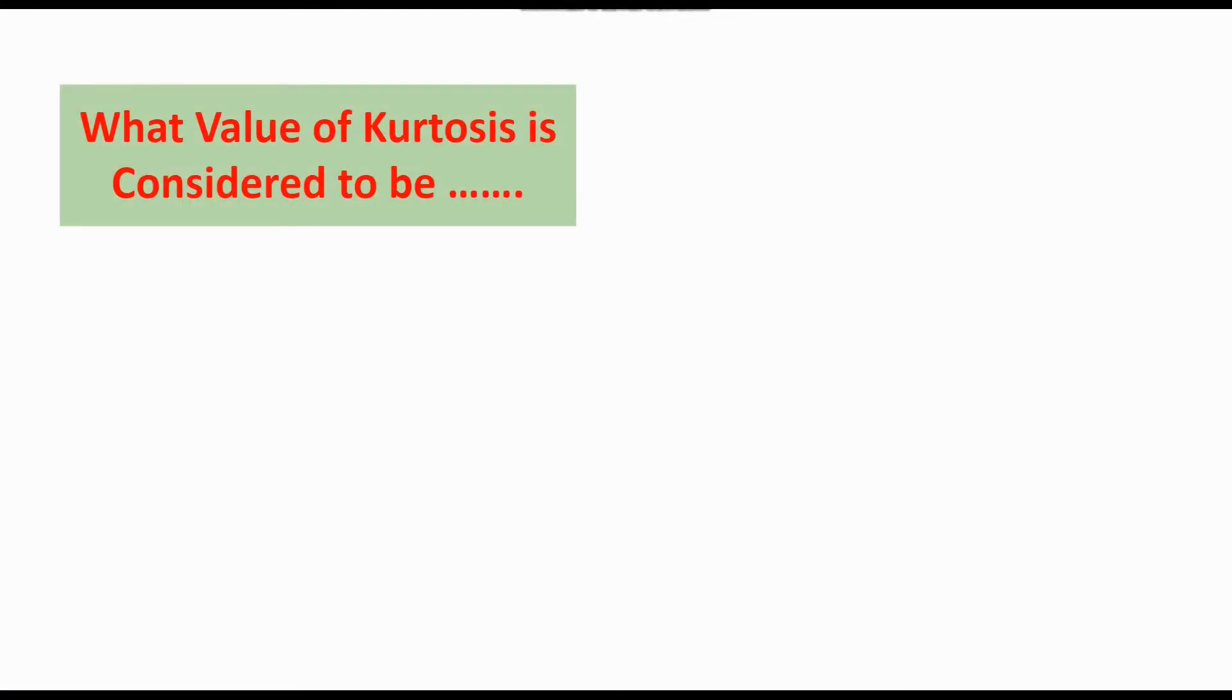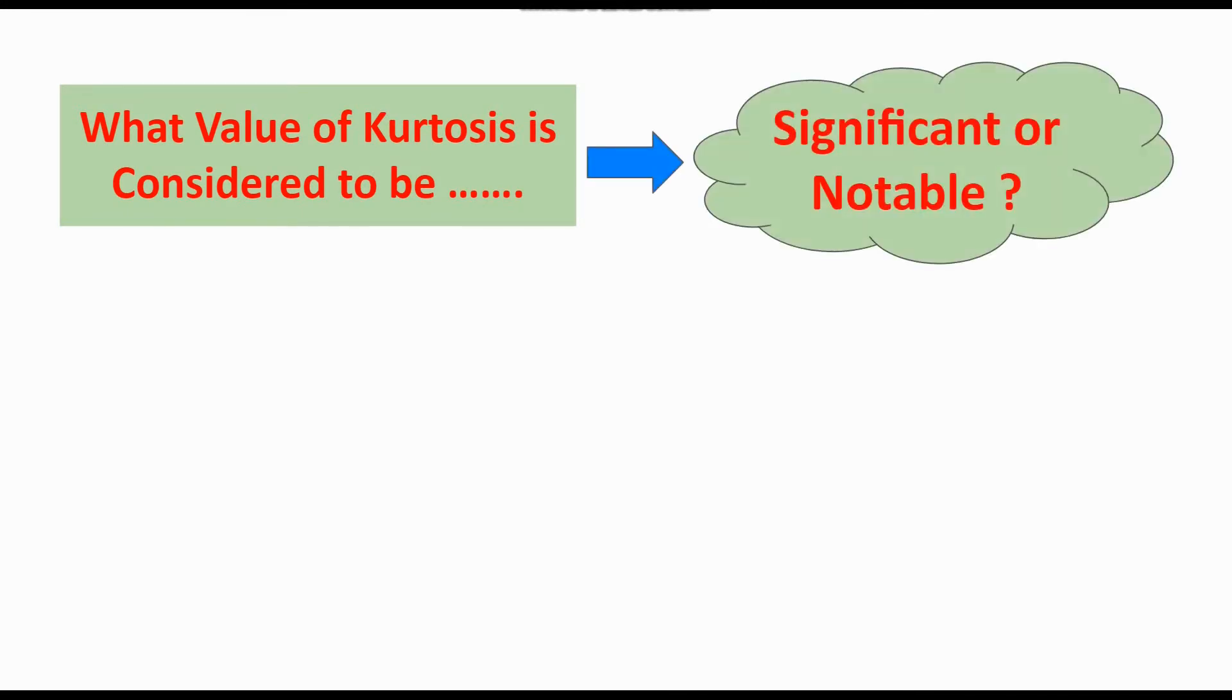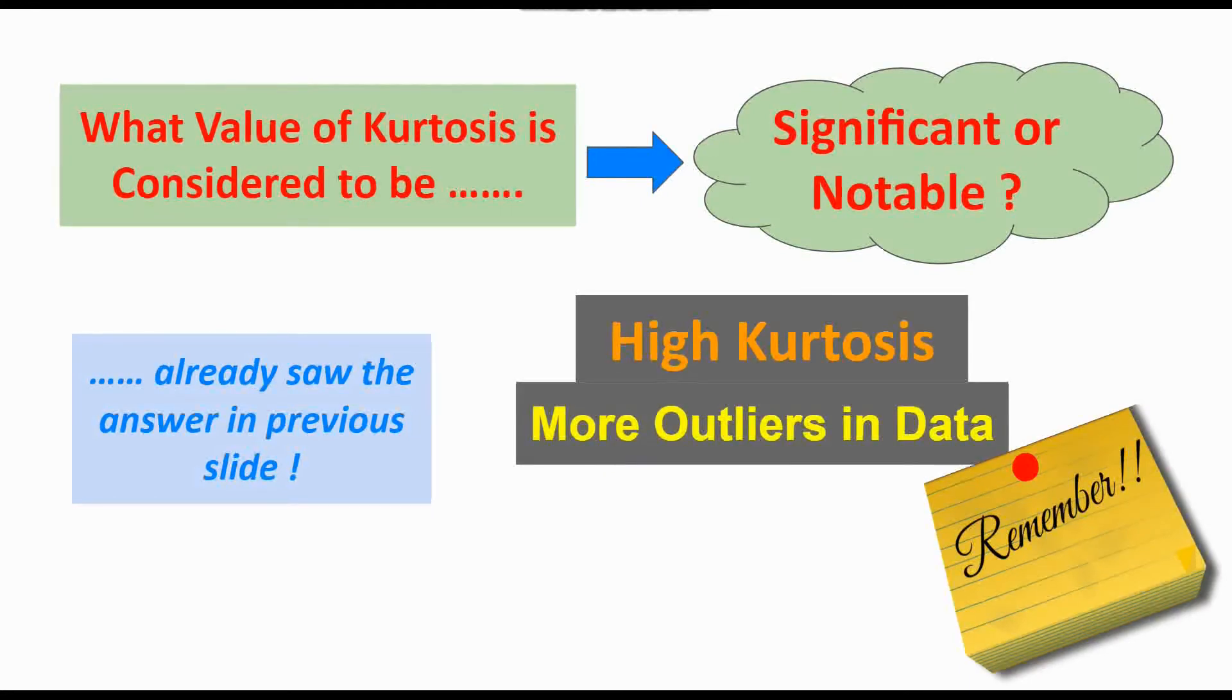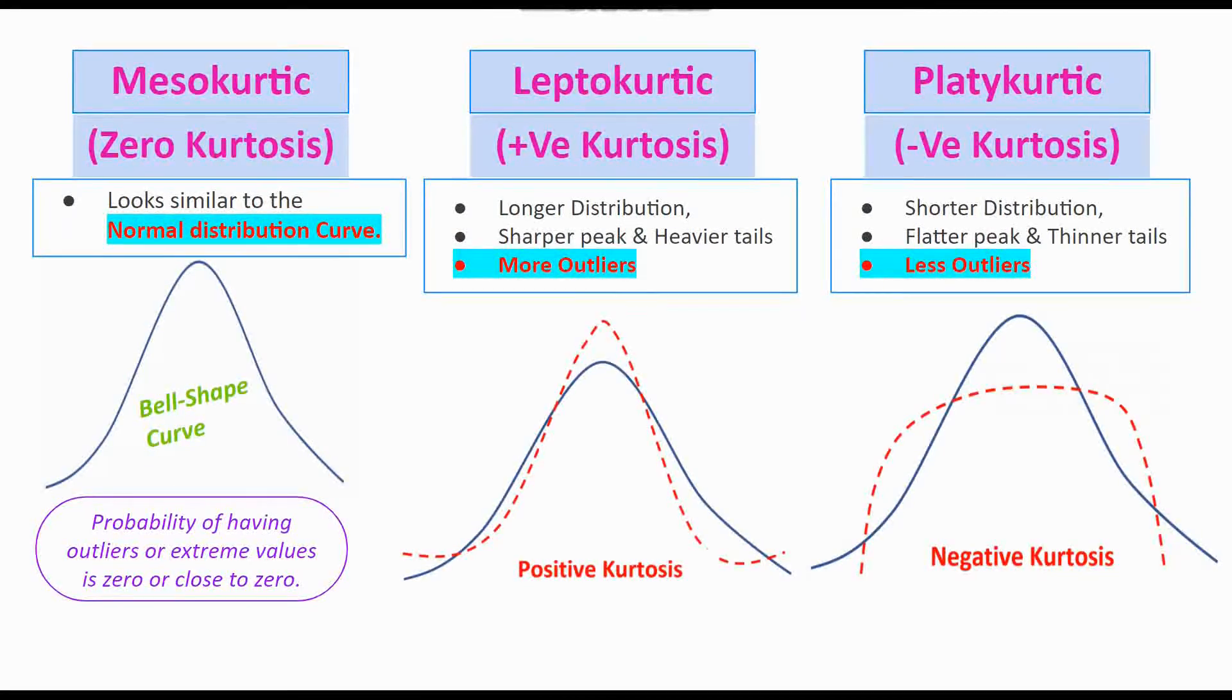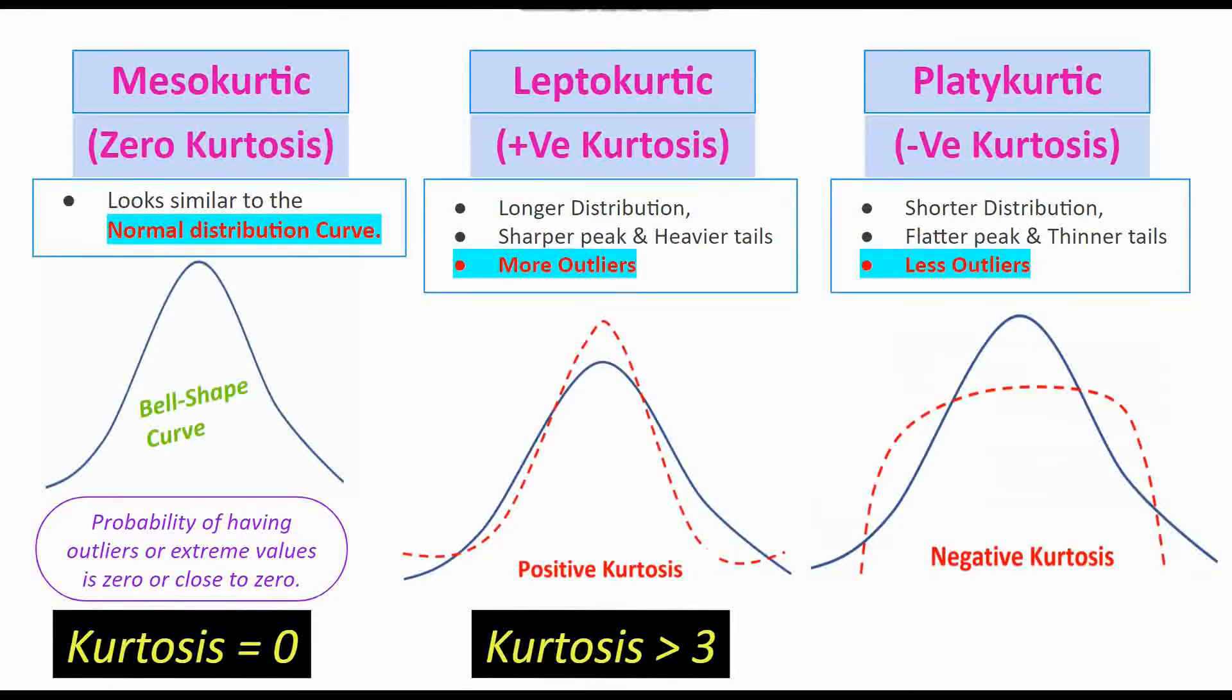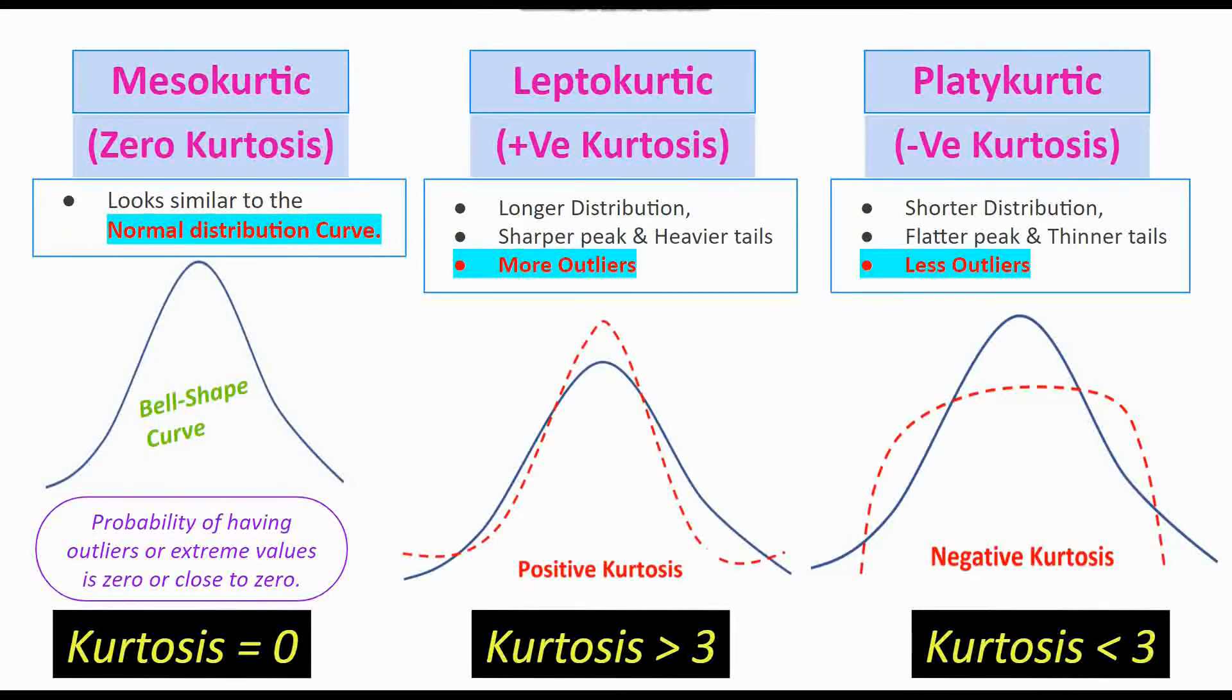Now if I ask you what value of kurtosis is considered to be significant or notable, keeping in mind that higher kurtosis means more outliers in data, we already saw the answers in the previous slide. You see that for mesokurtic we have zero kurtosis, for leptokurtic positive kurtosis, kurtosis is greater than 3, and for platykurtic we have less than 3.